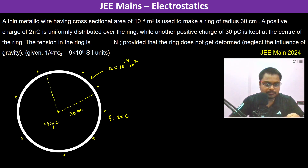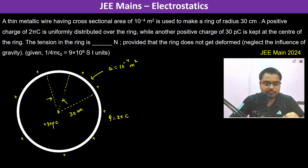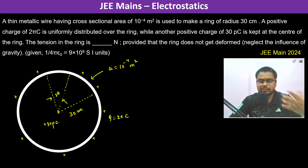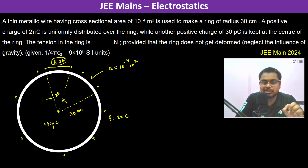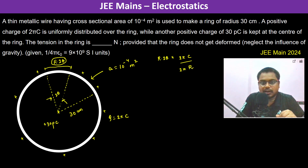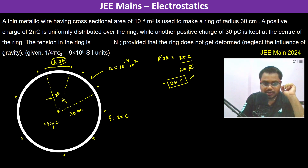We take a small part of the ring subtending an angle of 2θ at the center. The arc length of this element is r·2θ. The charge on this element is r·2θ multiplied by the charge per unit length, which is 2π coulombs divided by 2πr. Simplifying, the charge on this small element is 2θ coulombs.